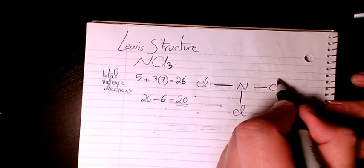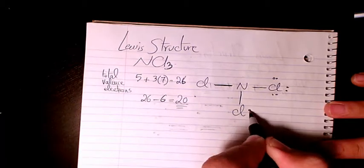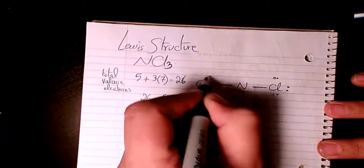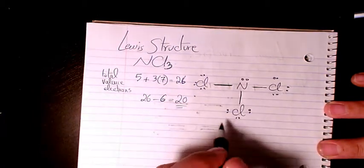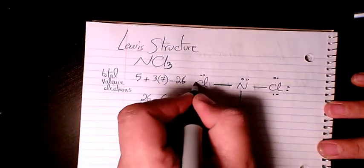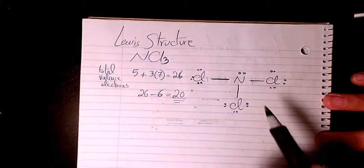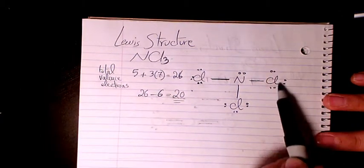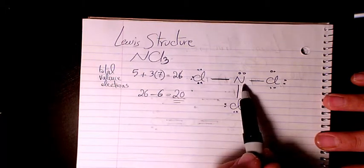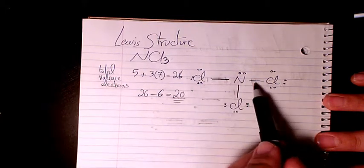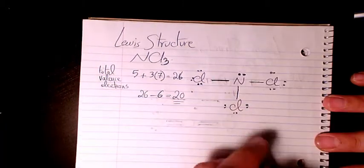We distribute the 20 remaining electrons: six electrons around each chlorine atom to complete their octets, and two remaining electrons go on nitrogen. We check the octet rule — chlorine has eight electrons each, and nitrogen has eight as well.